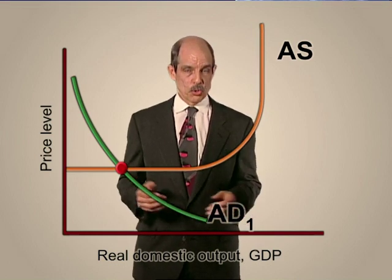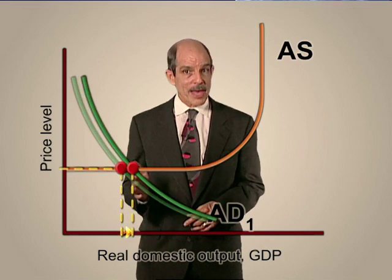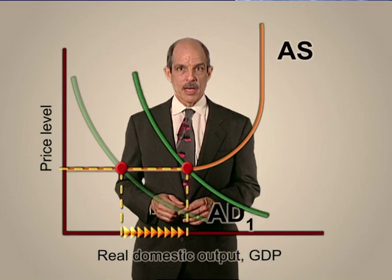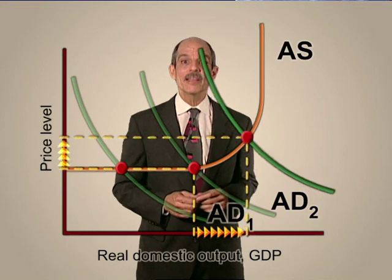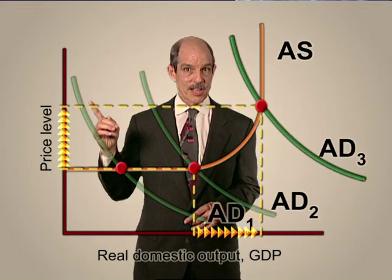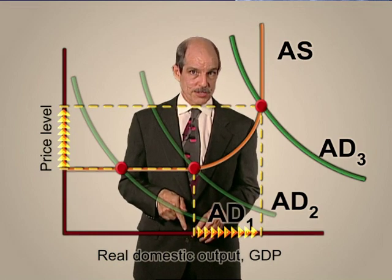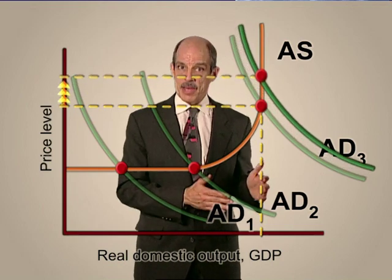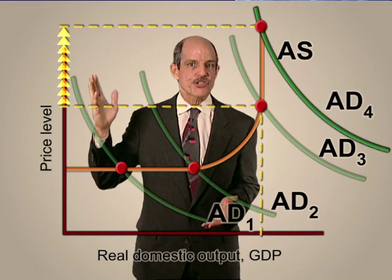All resources are being used as productively as they can be. Every company is operating at full capacity. Everyone in the workforce is employed. When aggregate demand is low, more demand means more GDP — an expanding economy. But once we are near the full capacity limit, any more demand will begin to translate into higher prices on the price-level axis, and slower growth in output on the GDP axis. And past full capacity, any more demand translates entirely into higher prices.